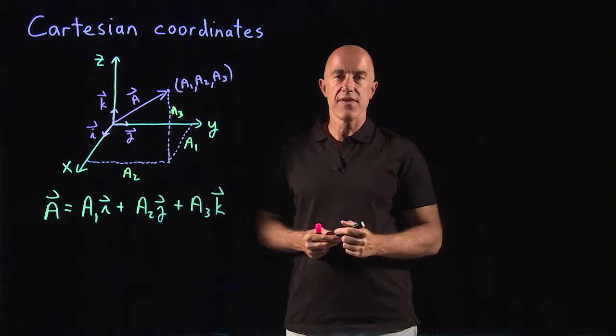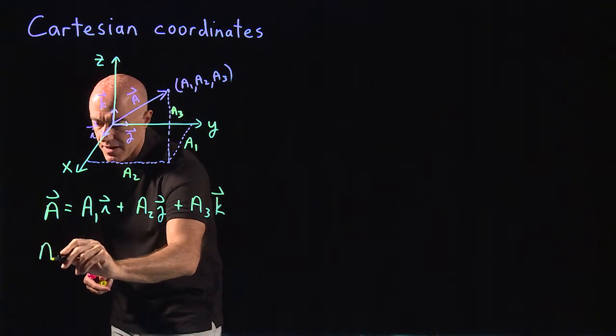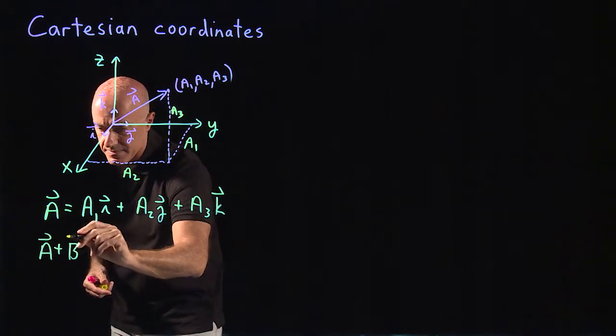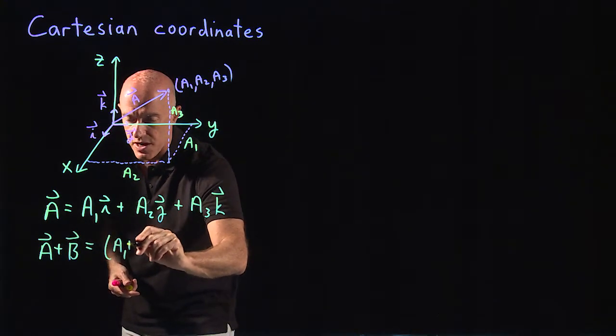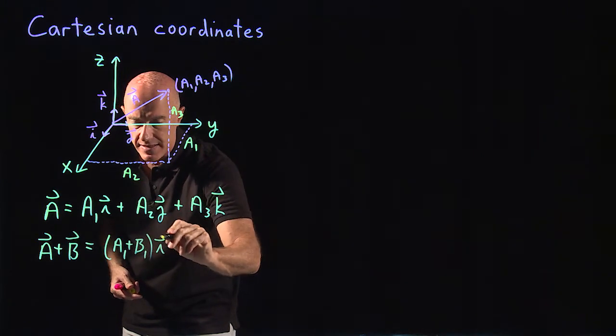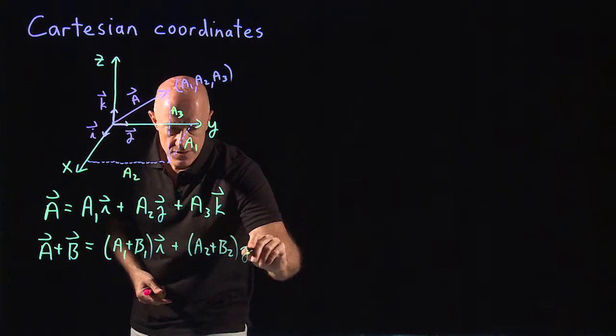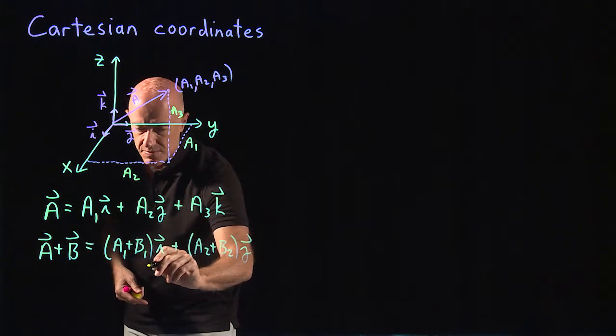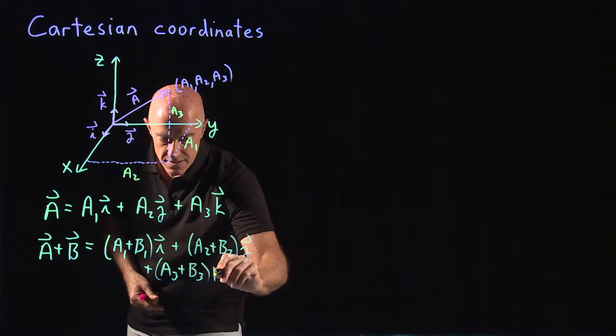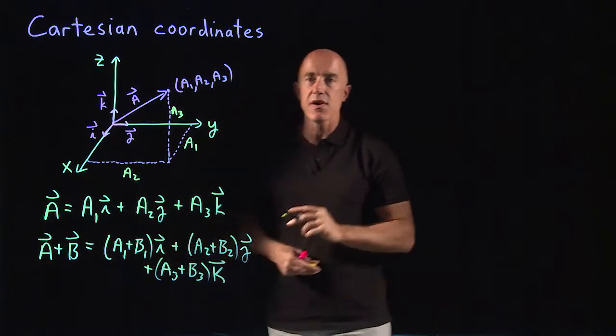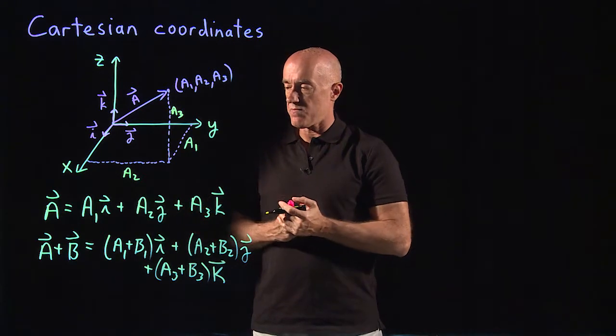So how do you add vectors using Cartesian coordinates? Well, let's say we have a b vector of the same type, so we want to add a plus b. Then we would add the components. So it would be (a1 plus b1) times i, plus (a2 plus b2) times j, plus (a3 plus b3) times k. So very simple to do vector addition when you have the components of a vector.